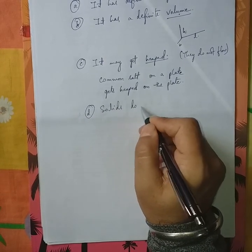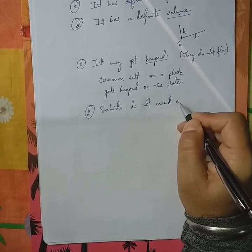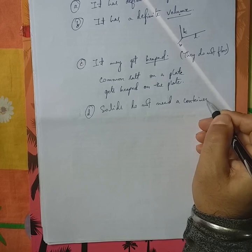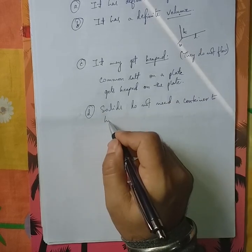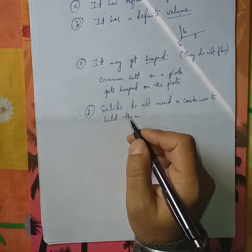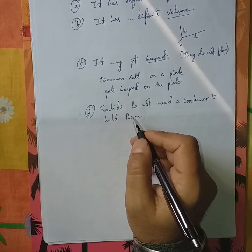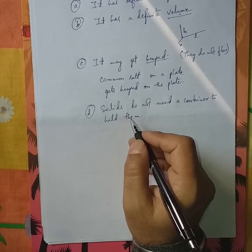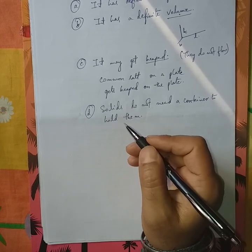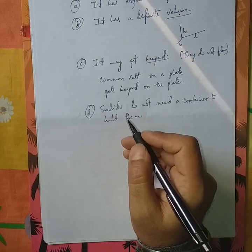Another important thing we can see is solids do not need a container to hold them. So, every solid objects, we do not have any container to keep them, isn't it? We keep a solid on the table, it remains like that only. Anywhere you keep it, the solid remains like that only.